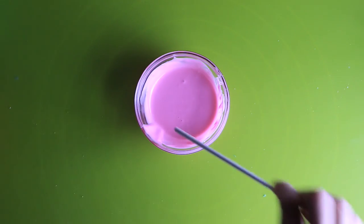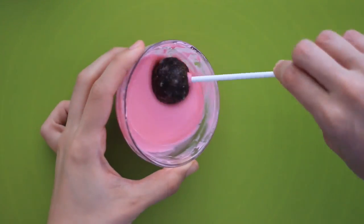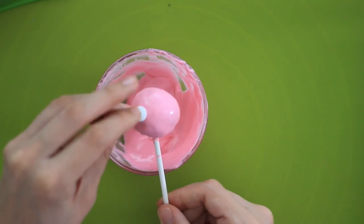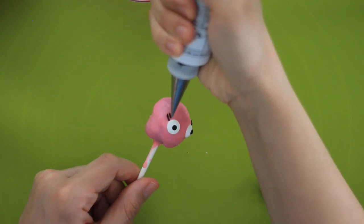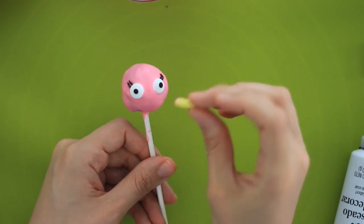Repeat the same steps, microwave the candy melts, and then decorate Stella. Add the candy eyeballs. Use the number one tip to add the eyelashes. Yellow Laffy Taffy for the beak.